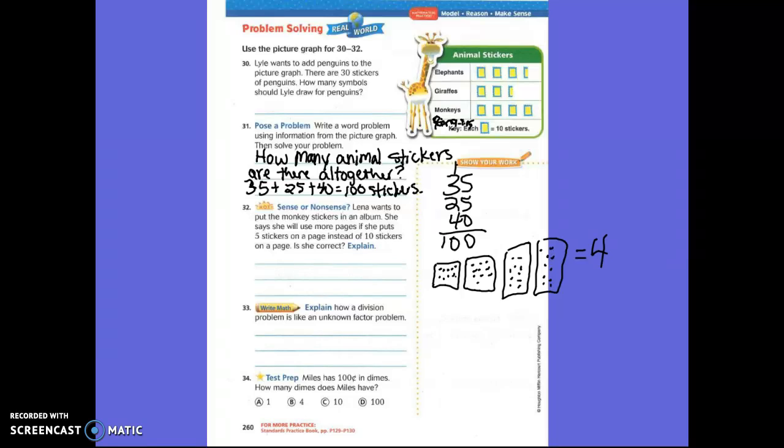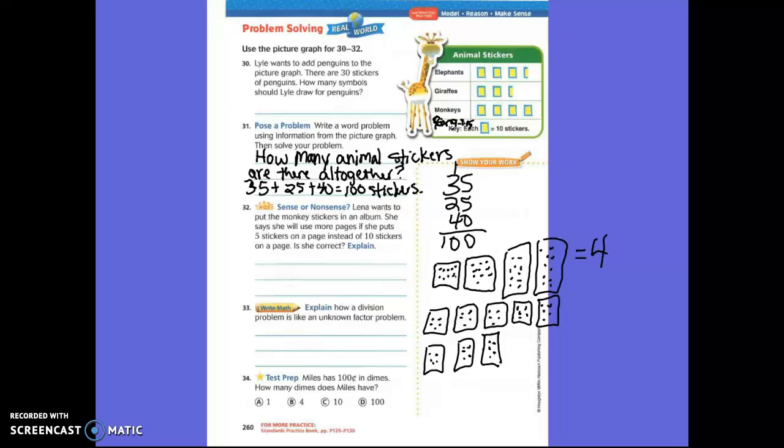Now let's do it if she puts 5 on a page. There's 5, 10, 15, 20, 25, 30, 35, 40. So will she use more pages if she puts 10 on a page, or will she use more pages if she only puts 5 on a page? Five on a page. Now how many pages did she use if she only put 5 stickers on a page? Eight. Eight pages. One, two, three, four, five, six, seven, eight.